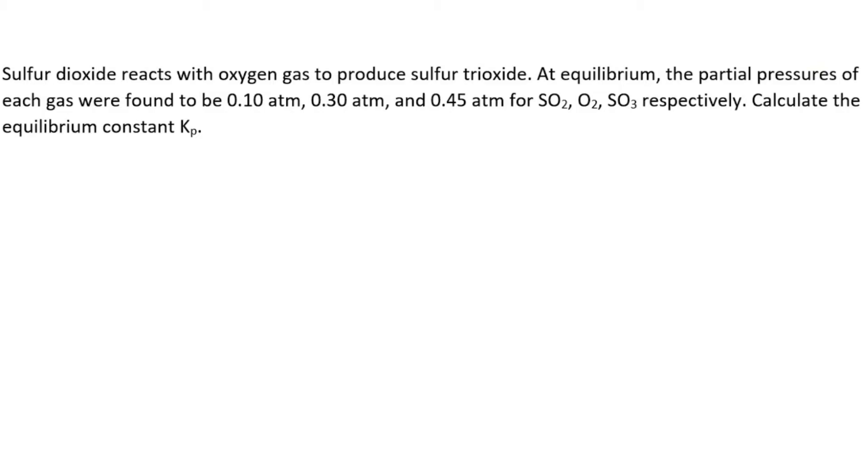Today we're going to be looking at this question: sulfur dioxide reacts with oxygen to produce sulfur trioxide. At equilibrium, the partial pressures of each gas were found to be 0.10 atm, 0.30 atm, and 0.45 atm for sulfur dioxide, oxygen gas, and sulfur trioxide respectively. Calculate the equilibrium constant Kp.